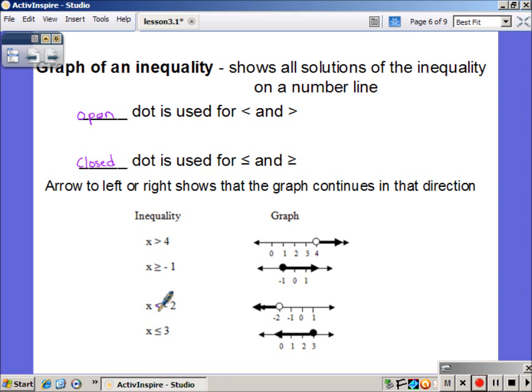x is less than or equal to 3, have the or equal to, so I see my closed dot, less than, again, my shading goes to the left.